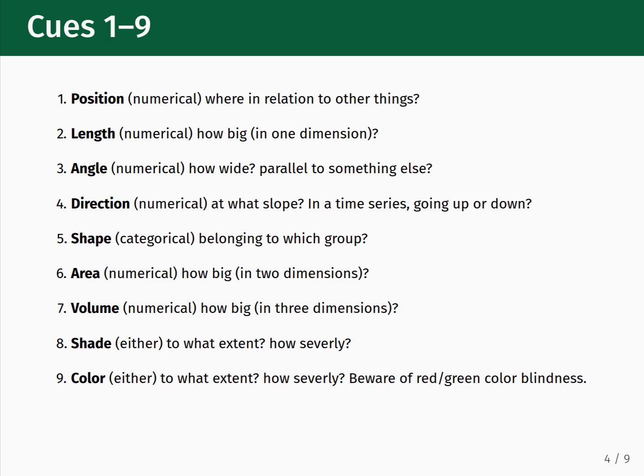The direction visual cue represents numerical data and can indicate slope in a dataset or, in a time series dataset, whether the trend is going up or down. The shape visual cue represents categorical data and shows what group different data points belong to. The area visual cue represents numerical data and shows how big something is along two dimensions. The volume visual cue represents numerical data and shows how big something is in three dimensions.